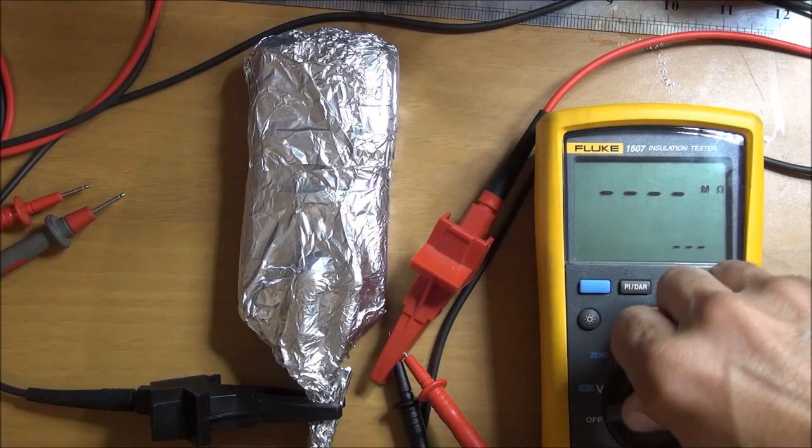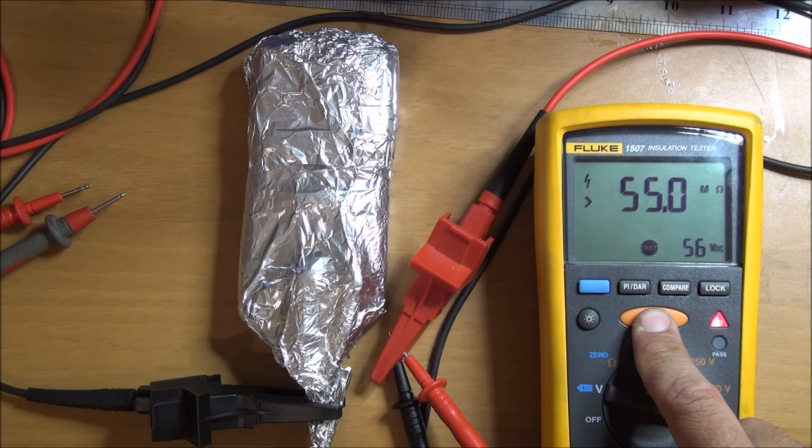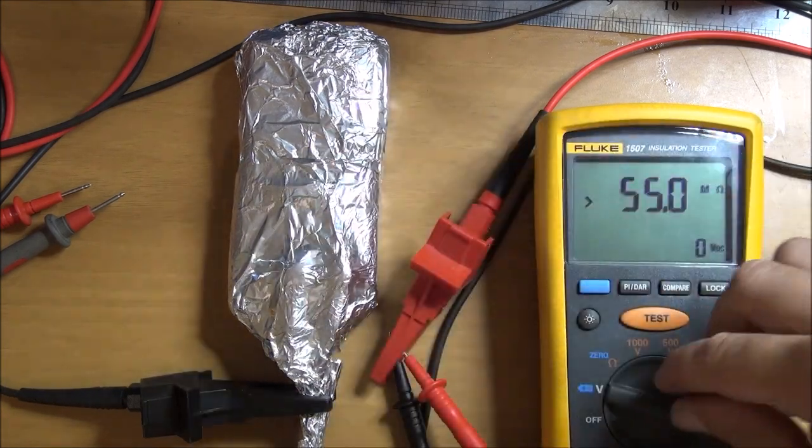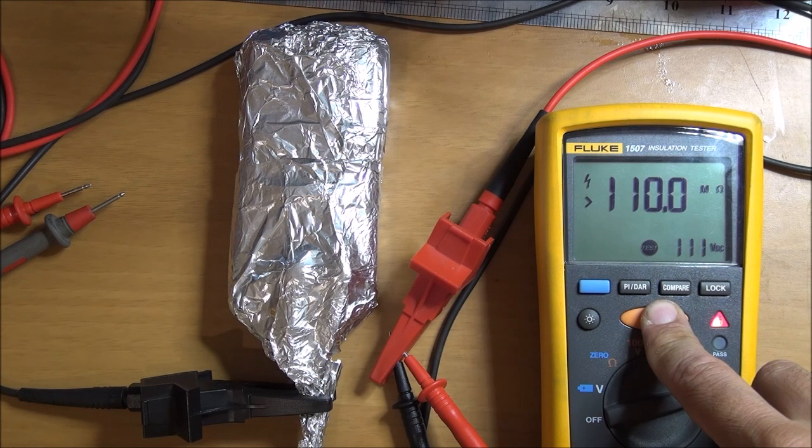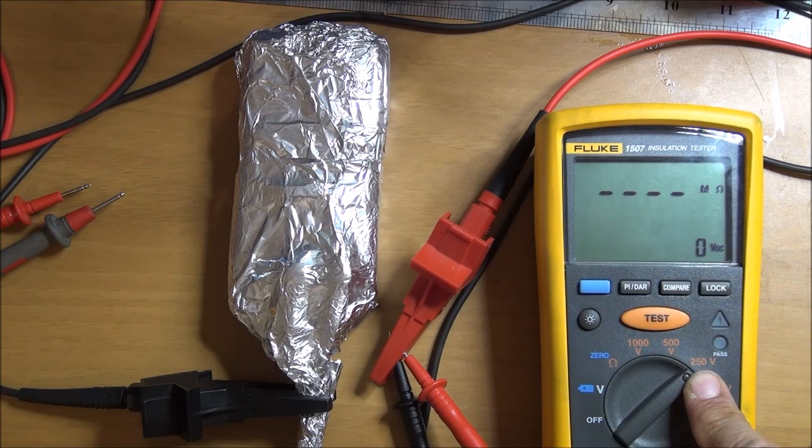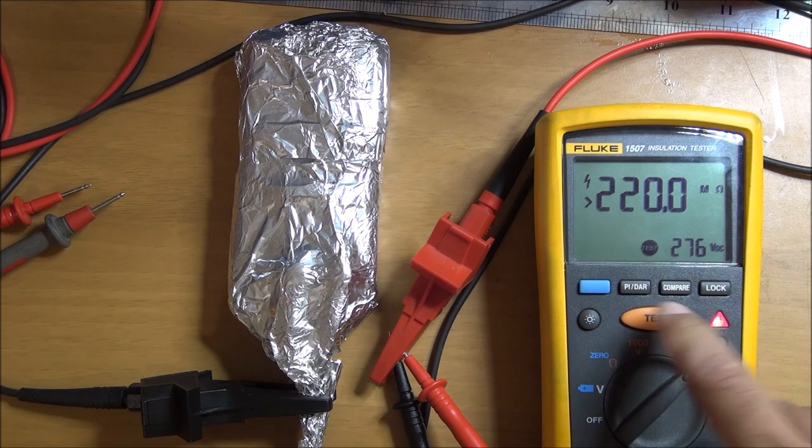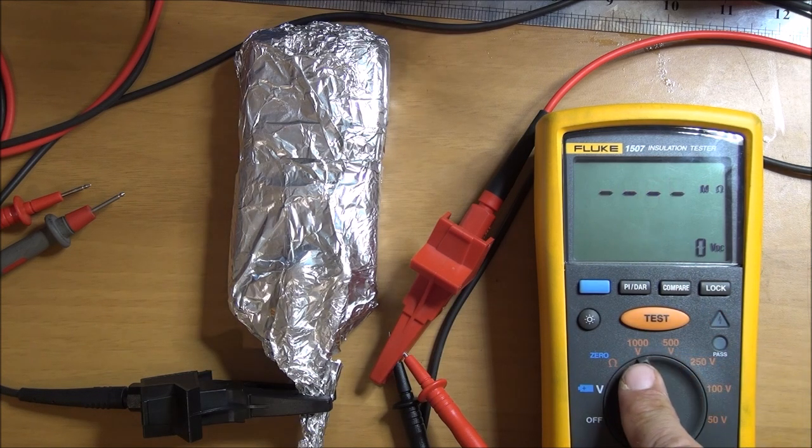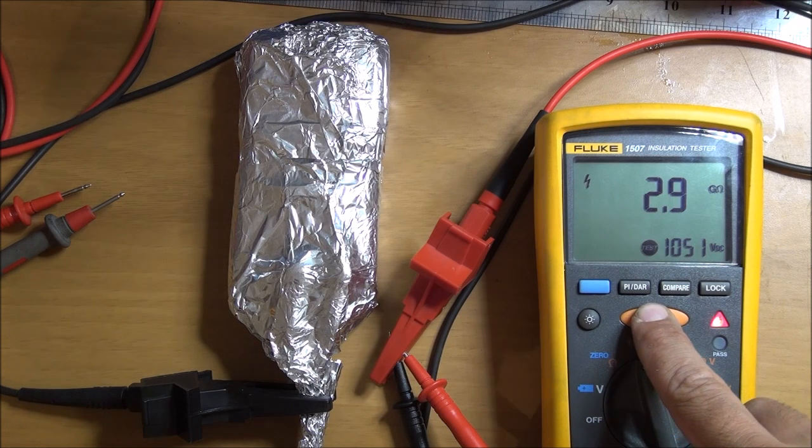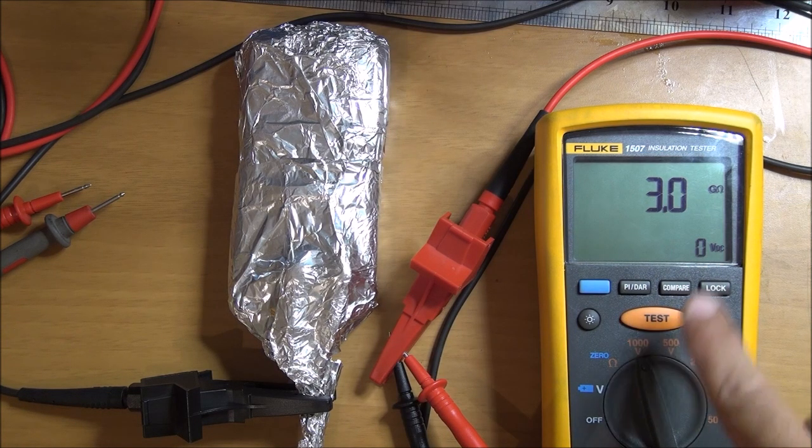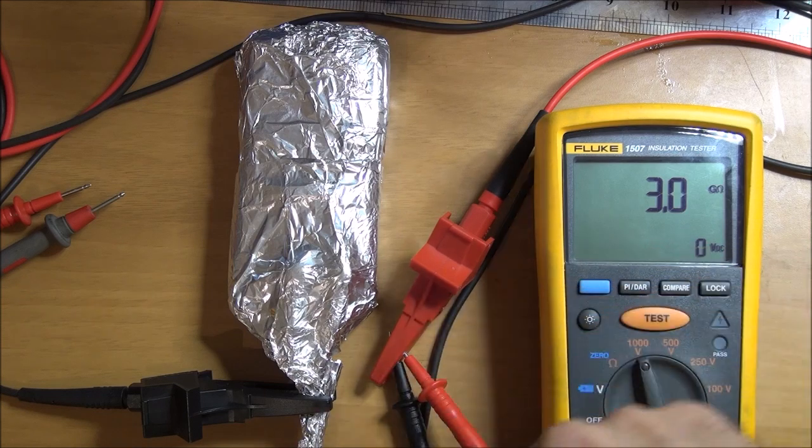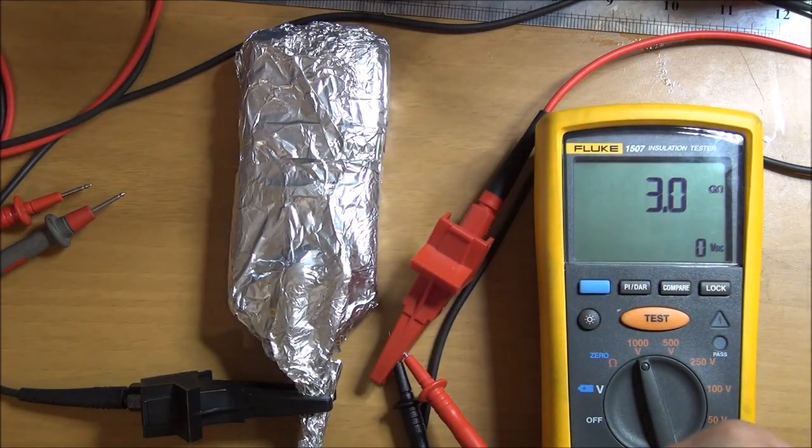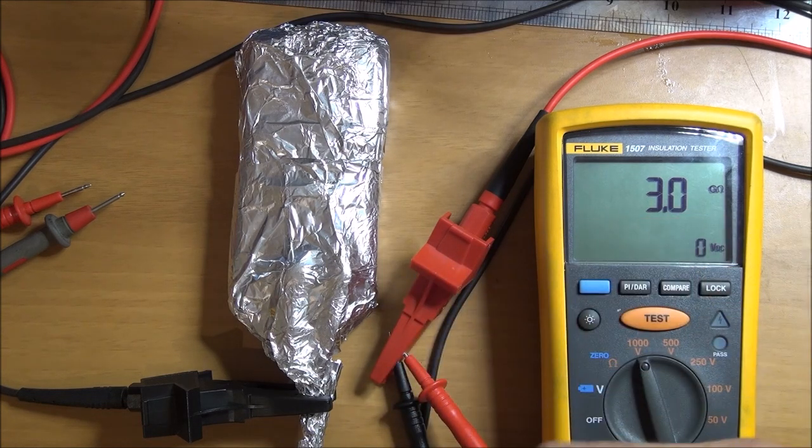So going by simply 550 volts, there is no problem. So 100 volts, there is no problem. 250, no problem. 500 volts, no problem. Now 1000 volts. Okay, you have 3 gigaohm of resistance in between the leads and the cover plastic cover of this multimeter.